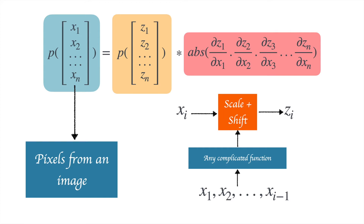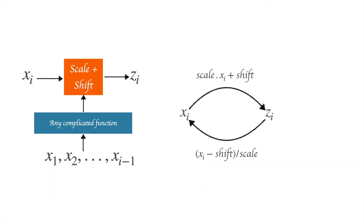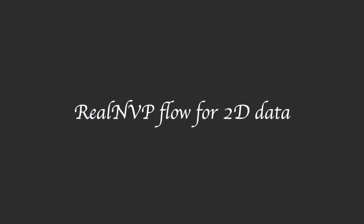Overall, the idea is the same: you still want to maintain the autoregressive property. The mapping from x to z is given by scale times x_i plus shift. And as you can see, it's very easy to go back to x_i from z_i.